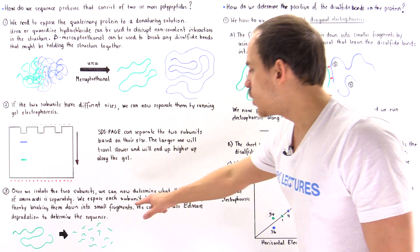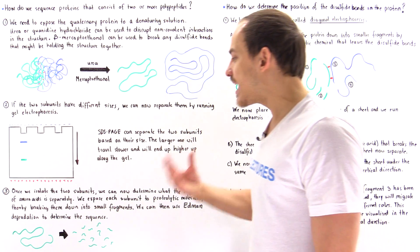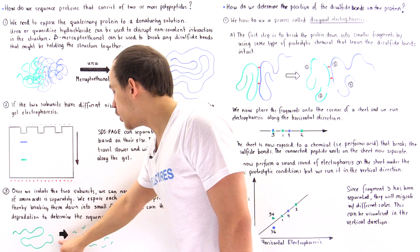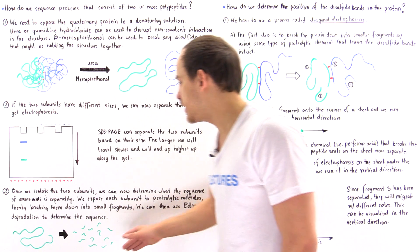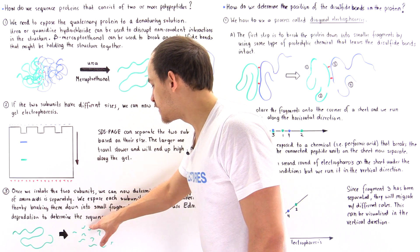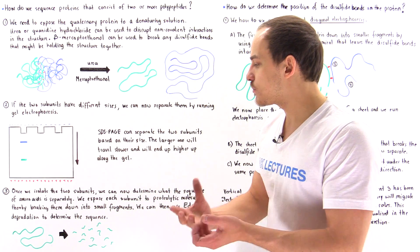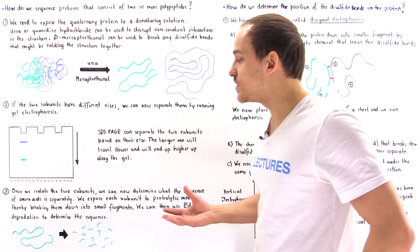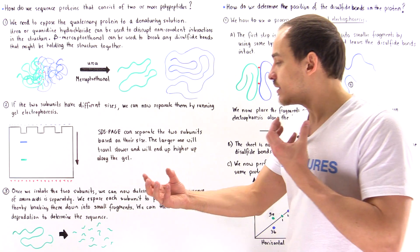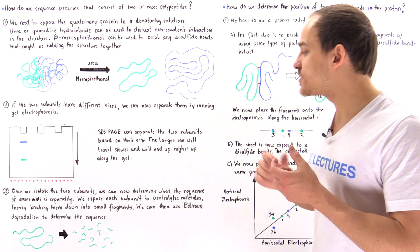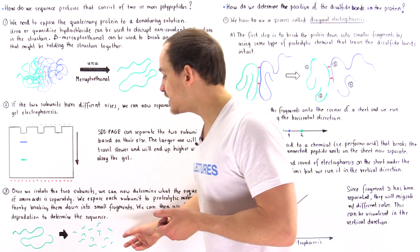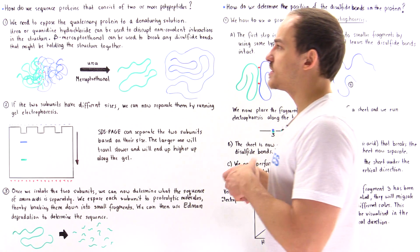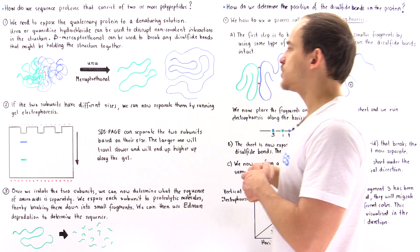Once we isolate the two subunits, we can determine the sequence of amino acids separately. We take this polypeptide chain, expose it to proteolytic enzymes, cut it up into many fragments, then run the Edman degradation process to determine the specific sequence of each fragment. Then we repeat the process with a different proteolytic enzyme, get a different set of fragments, run Edman degradation again to find the sequence, and use the two sets of fragments to find what the correct order is of these fragments with respect to one another. In that manner, we can find the amino acid sequence of this polypeptide, repeat that with the blue polypeptide, and at the end we know exactly the sequence of amino acids in this protein consisting of two polypeptide chains.